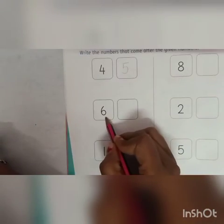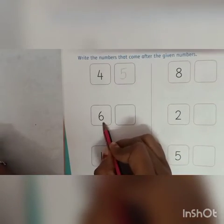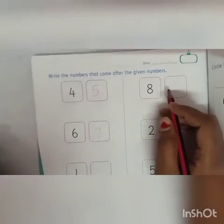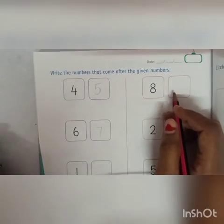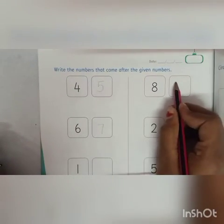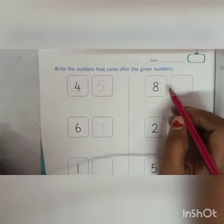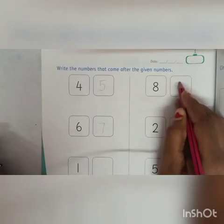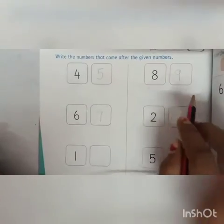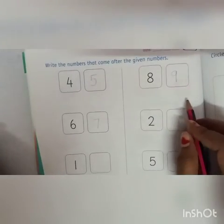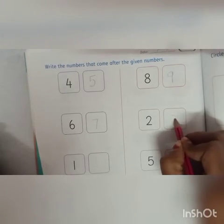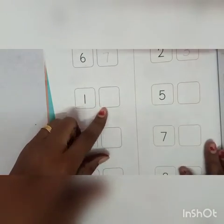After number 6, which number is? 7. After number 8 — 9. After number 2 — 3. So this is how you are going to write it. This is your homework.